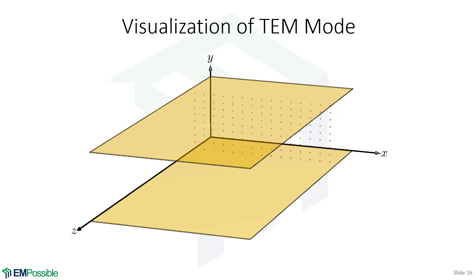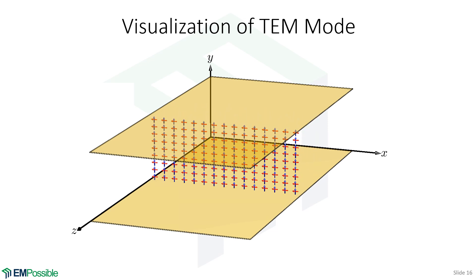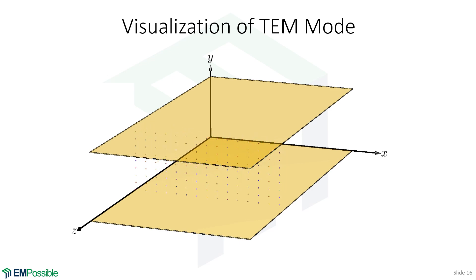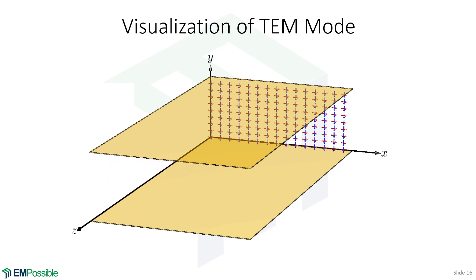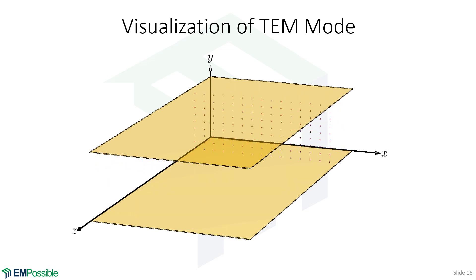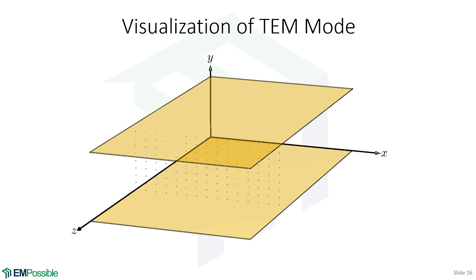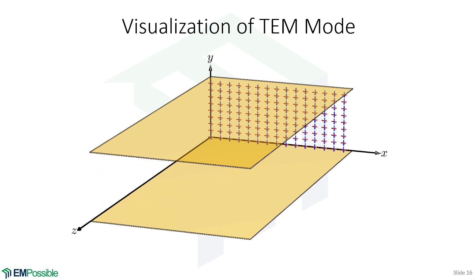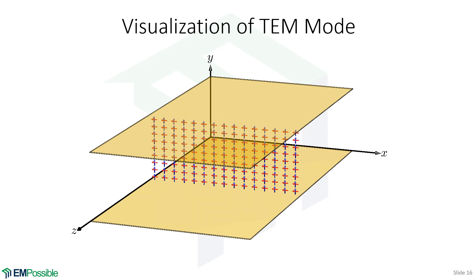Here is a visualization of the TEM mode in a parallel plate waveguide. The blue arrows show the electric field vector and the red shows the magnetic field. The electric field points straight from plate to plate, but oscillates because it is a wave — it goes in and out as the wave accumulates phase. The magnetic field always points in the X direction and also oscillates. Notice the amplitude is completely uniform from plate to plate — no bright spot in the middle or wavy pattern. That uniform field distribution is our TEM mode.